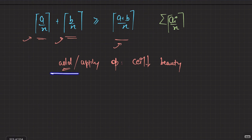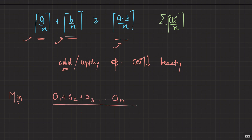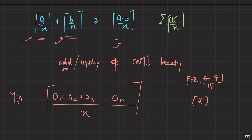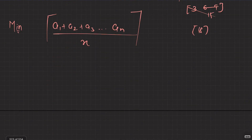So adding elements can only decrease the ceil. This means: if you want to minimize the beauty, just add all the elements. Adding elements may keep the beauty the same or reduce it, but they cannot increase the beauty. So the minimum beauty is ceil((a1 + a2 + ... + an) / x) — effectively, perform n-1 operations to get a single element which is the sum of all elements.